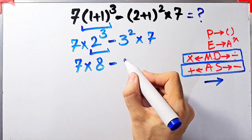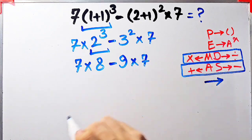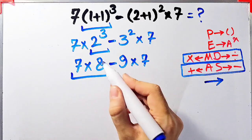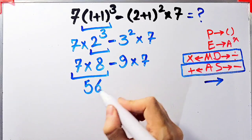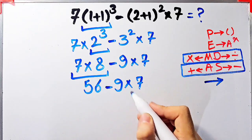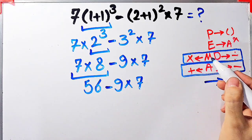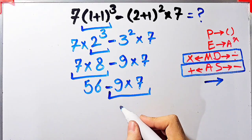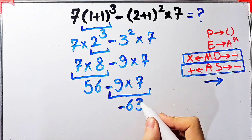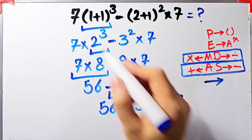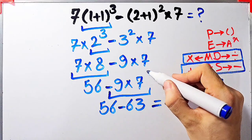Now the question is 7 × 8 − 9 × 7. We have multiplication and subtraction; first we do the multiplications. 7 × 8 = 56, then −9 × 7 = −63. Now the question is 56 − 63, which equals −7. The final answer of this question equals −7. Thanks for watching guys, please subscribe to the channel and leave a comment. Goodbye.